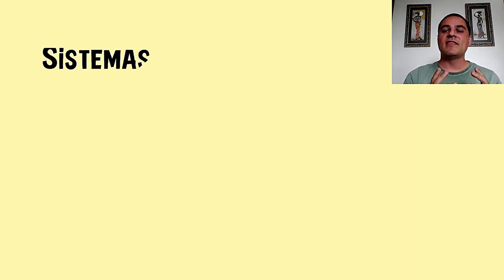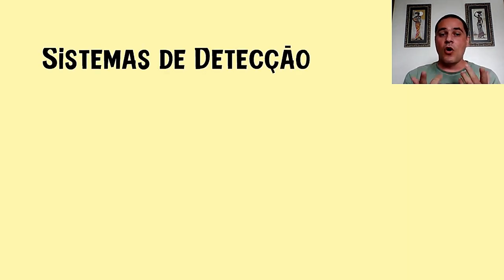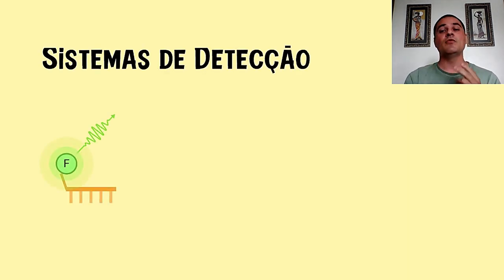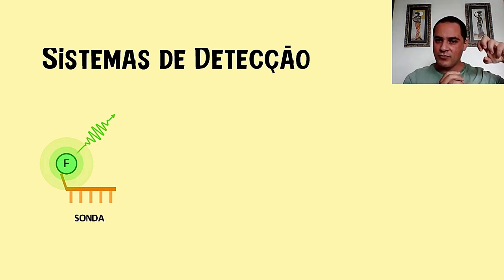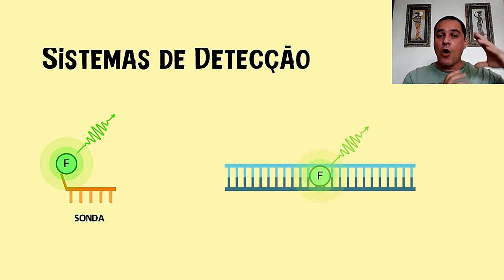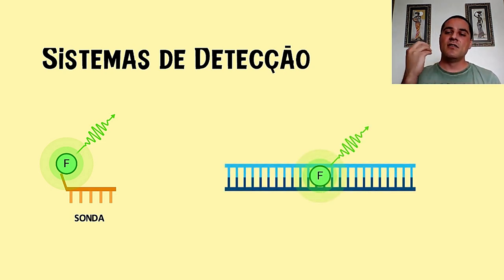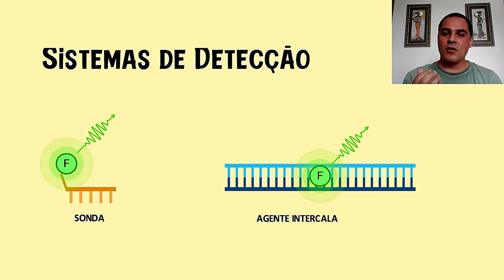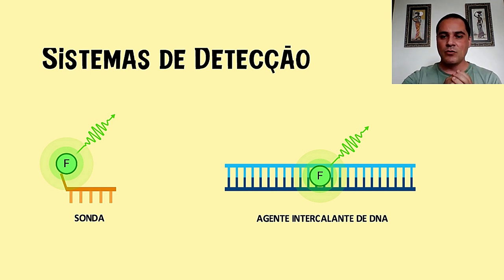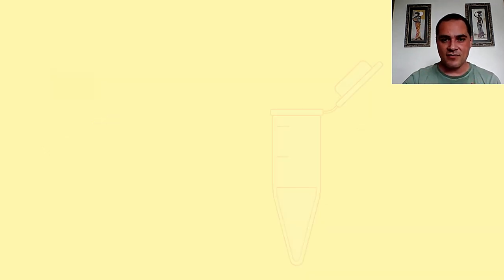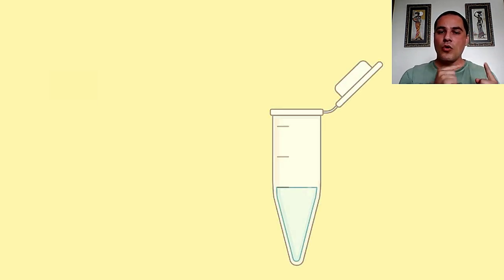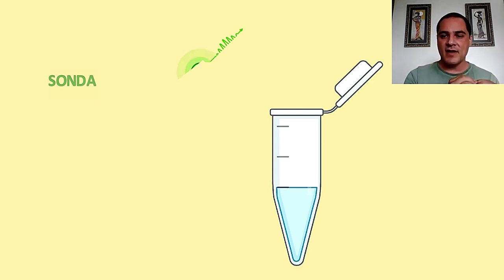Essa fluorescência pode estar de duas formas: ou numa forma de sonda, que seria um terceiro primer que possui em sua ponta uma molécula de fluorescência, um fluoróforo; ou ele também pode estar dissolvido em solução, o que a gente chama de agentes intercalantes de DNA — uma molécula solúvel que vai se integrar no DNA de maneira inespecífica. No caso da detecção do novo coronavírus, o que a gente vai utilizar é uma sonda fluorescente.